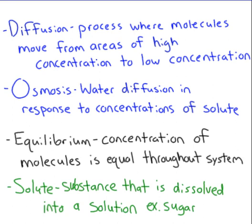Osmosis is pretty much just water diffusion, where water molecules are going to move in response to concentrations of solute. So water is going to move from high water concentration to low water concentration. Equilibrium is the goal of diffusion — molecules are going to move until they are at an equilibrium, which means there's an equal concentration of molecules on both sides. The molecules are evenly spread out; each molecule has its own space.